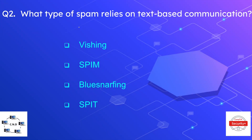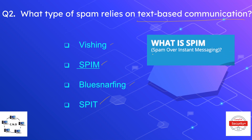Question number two: what type of spam relies on text-based communication? The options are vishing, SPIM, bluesnarfing, or SPIT. The correct answer is SPIM, which stands for Spam over Instant Messaging. The method in which an attacker uses instant messaging or text-based communication is known as SPIM.